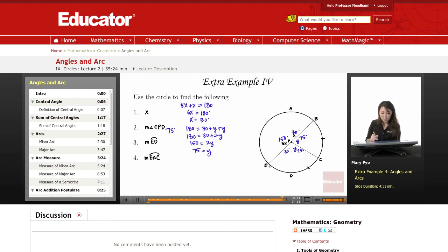So measure of arc ED. Measure of arc ED. Well, the central angle right here is 30, so then this has to be 30 degrees. And the measure of arc EAC. So EAC, all of this together. Okay. So this right here, 150 and 30 and 75. So this measure of arc EAC is going to equal 150 plus 30 plus 75. Okay. So this is 180 plus 75, which is going to be 255.